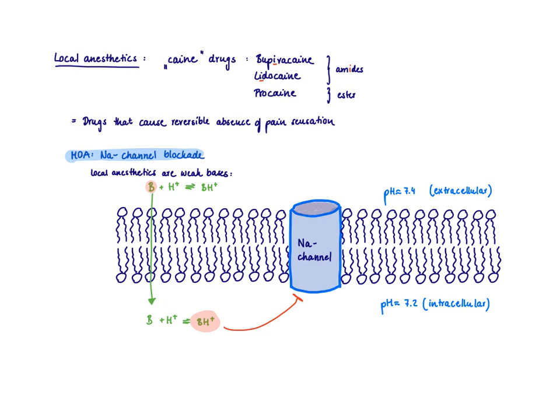It is also important to know that we have amides and esters. This has some relevance as amides are not as fast degraded in the body than esters, so generally the amide local anesthetics have a longer half-life than the esters.